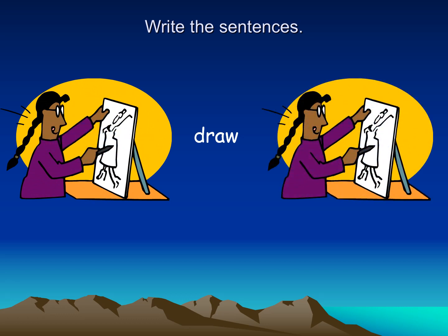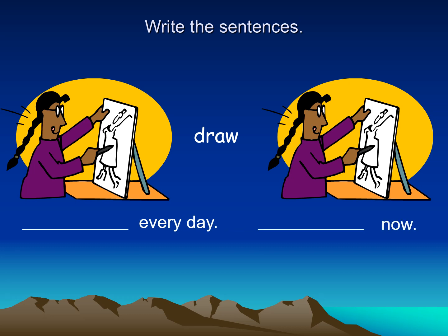What do you think about this one? I want to write the sentences. In the first one, she draws every day. But what about the next picture? I'm speaking about what she is doing right now — she is drawing now. So I use the present simple when I speak about a habit or something she does every day, but I use the present continuous when I speak about what she is doing right now.